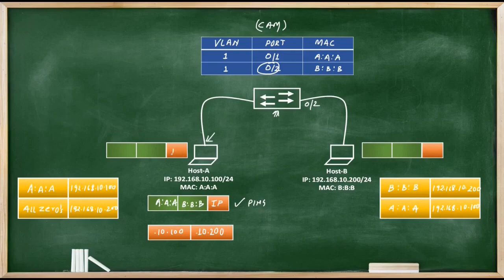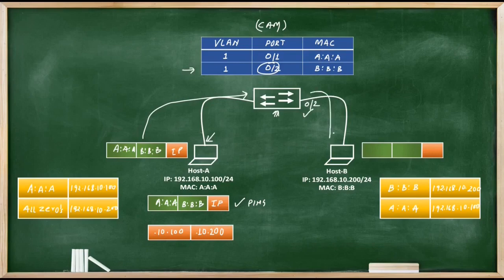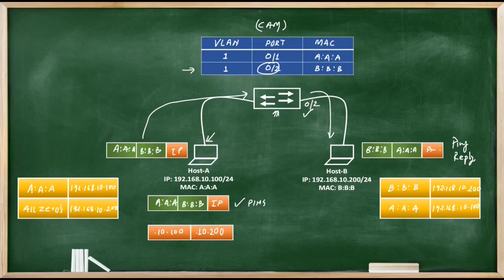The IP packet has source MAC A:A:A and destination MAC B:B:B. The ping packet reaches the switch, which consults its CAM table and forwards it out of interface 0/2 towards Host B. Host B then replies with a ping reply packet, with source MAC B:B:B and destination MAC A:A:A. When this reply reaches the switch, it forwards it out of interface 0/1, and Host A and Host B have successfully communicated inside the same network.